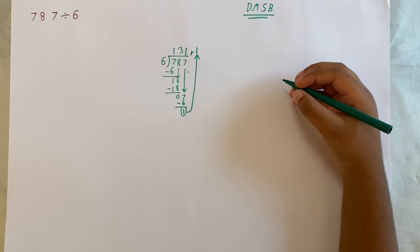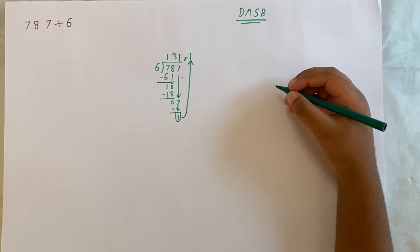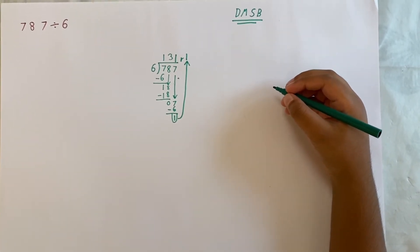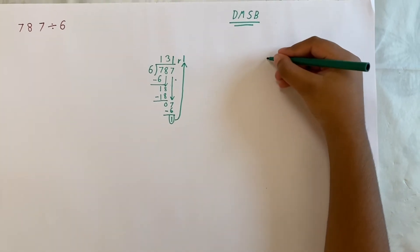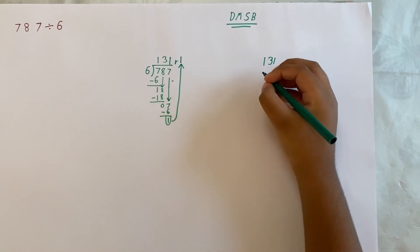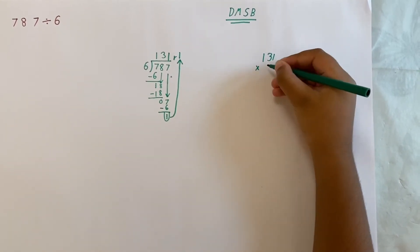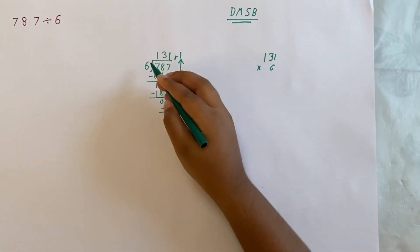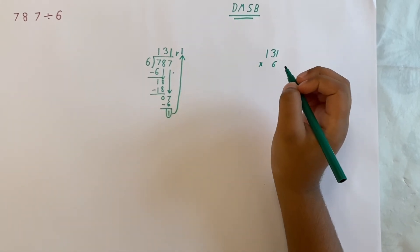Now, let's check our answer. To check our answer, we need to do the multiplication of 131, our quotient, multiplied by 6, our divisor.